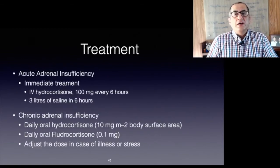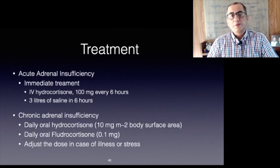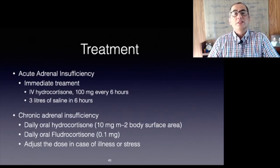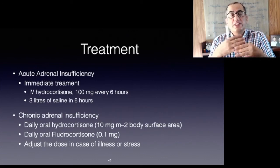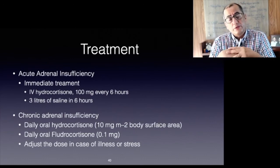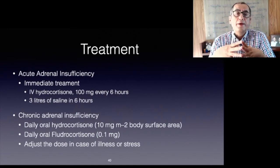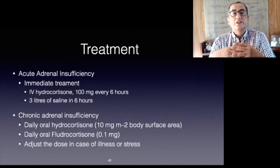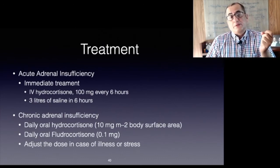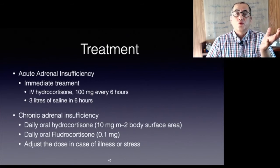If a patient displays features of adrenal insufficiency, treatment must be instituted immediately before biochemical diagnosis. Initial blood samples can be used for later determination of ACTH and cortisol levels. In addition to intravenous hydrocortisone 100 mg every six hours, three liters of normal saline is given over six hours under careful cardiovascular monitoring. Concomitant infections frequently present and require aggressive antibiotic treatment.